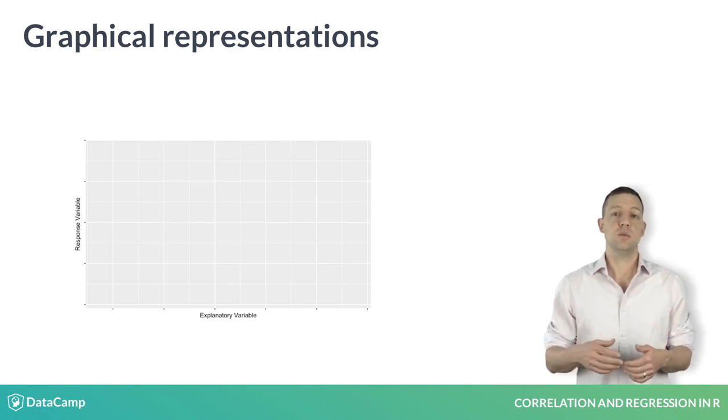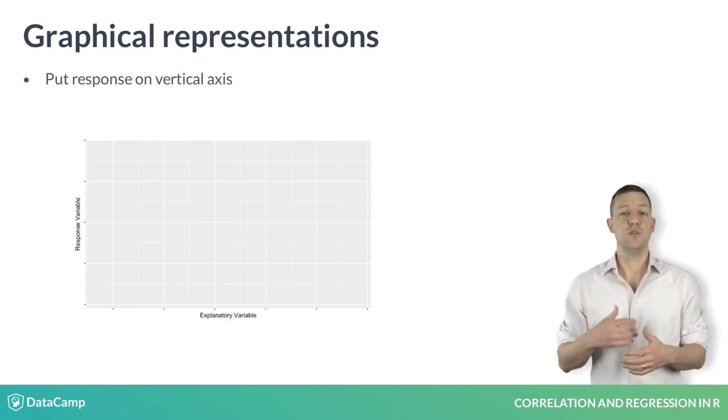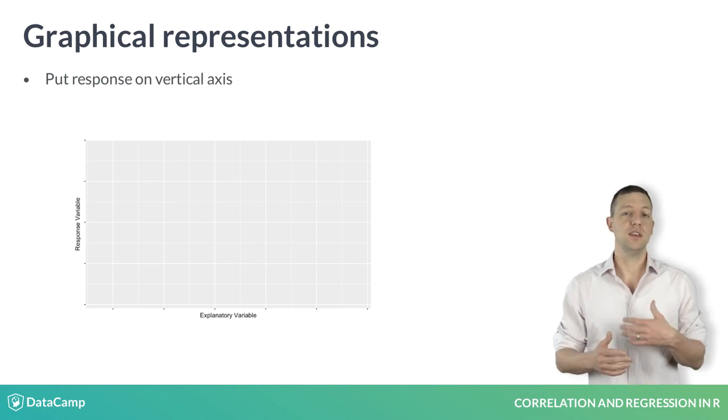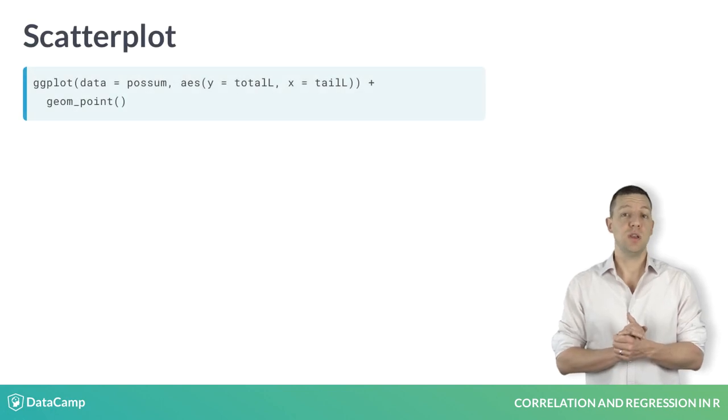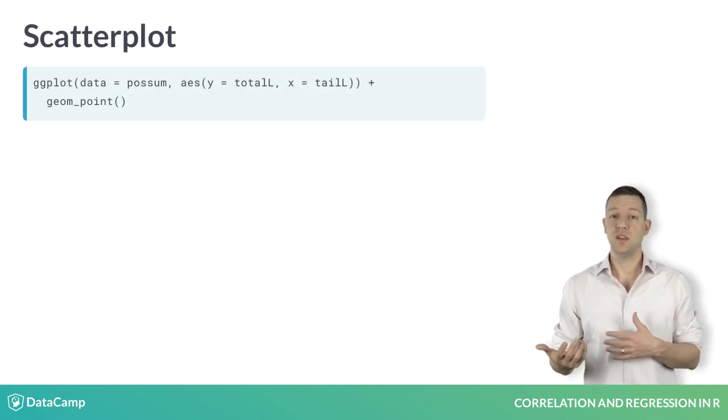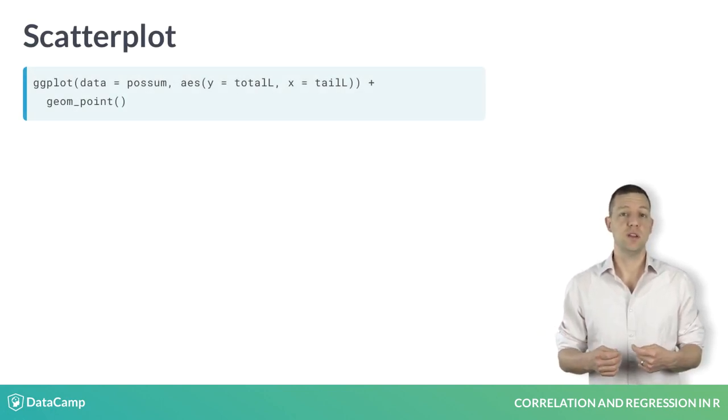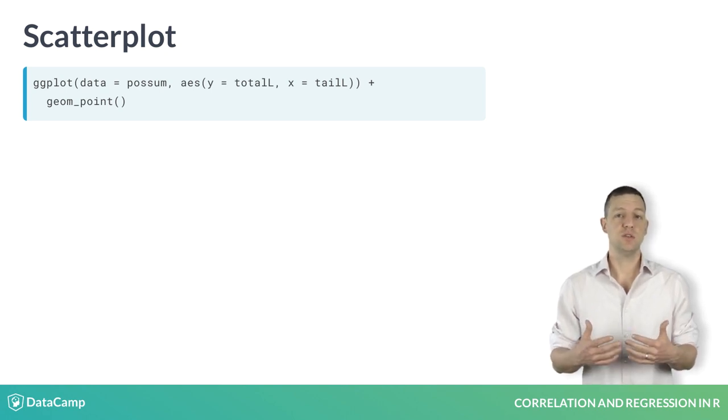By convention, we always put the response variable on the vertical or Y axis, and the explanatory variable on the horizontal or X axis. In ggplot, we bind the X and Y aesthetics to our explanatory and response variables, and then use the geom_point function to actually draw the points.